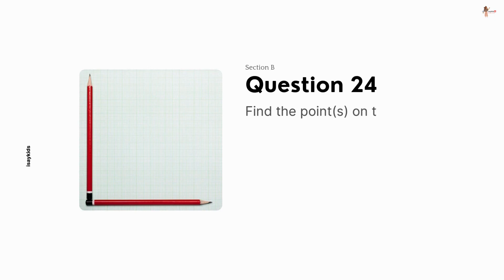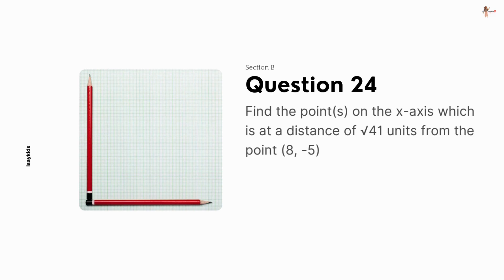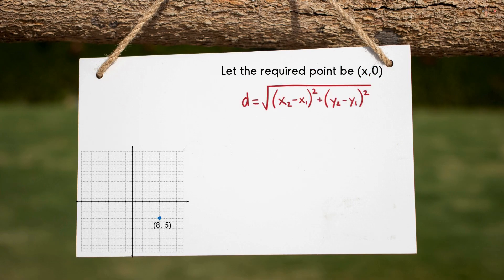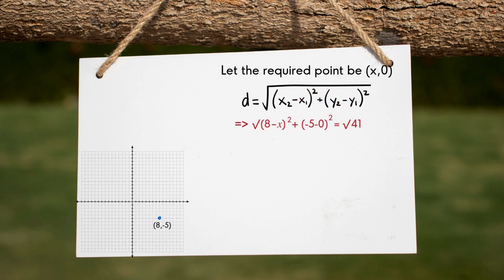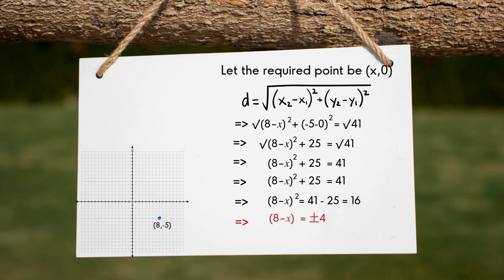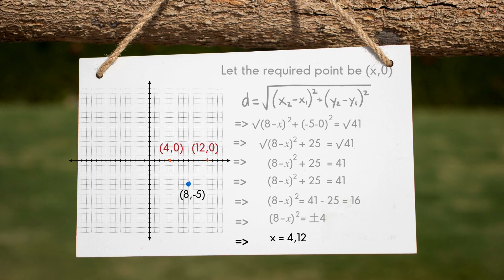Find the point on the x-axis which is at a distance of root 41 units from the point (8, -5). Let the required point be (x, 0). Distance formula is applied and substituting the given values, we get 8 minus x squared equals 16, so 8 minus x would be plus or minus 4, giving x as 4 or 12. Thus, the required points on the x-axis are (4, 0) and (12, 0).